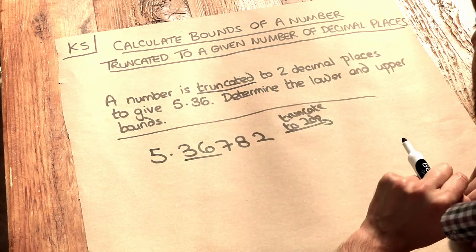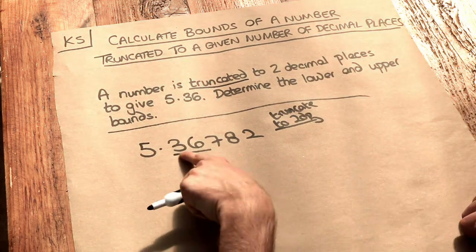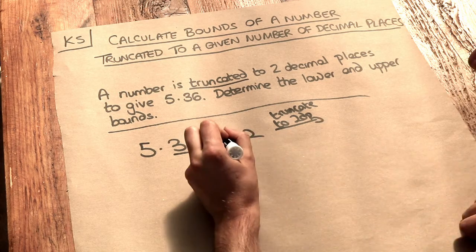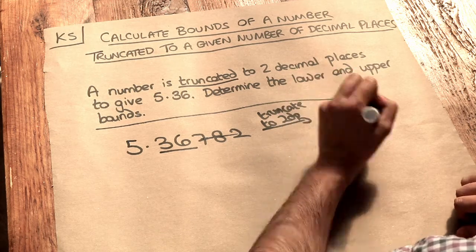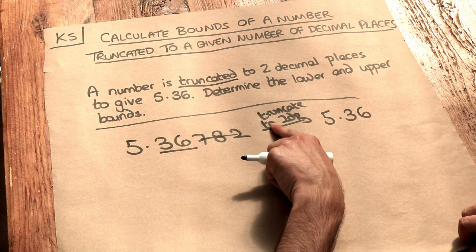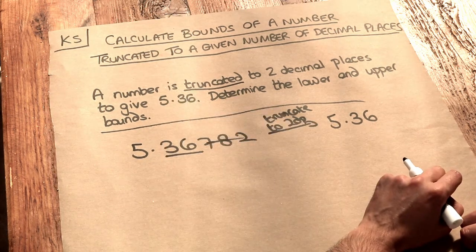But this is truncating to two decimal places, and that's actually simpler than rounding. All we do is we look at the first two digits, the 3 and the 6, but we don't check the digit after. We just simply discard it and that would be 5.36. So we can see that if we had some original number and we truncated it to two decimal places, that would give us this desired number of 5.36.